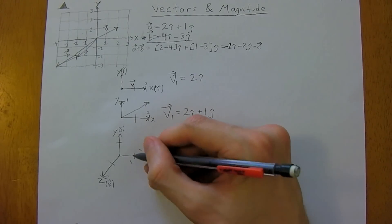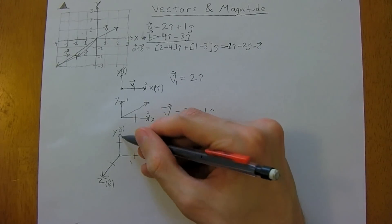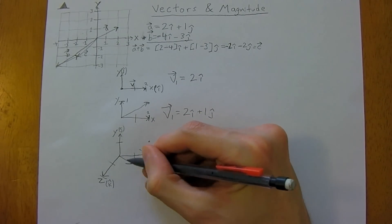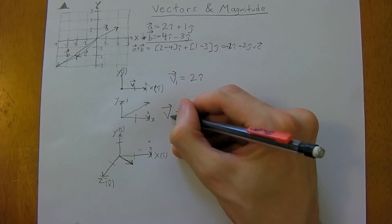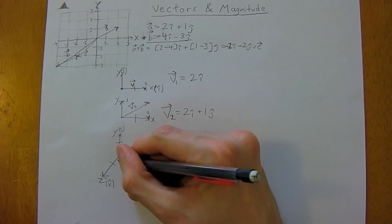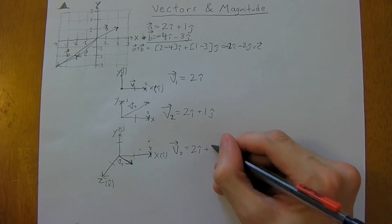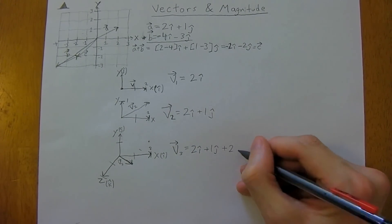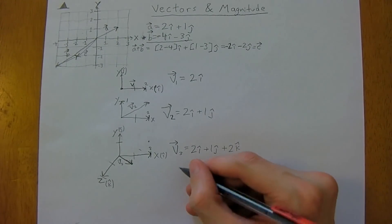We would represent that vector in three directions as 2i-hat plus 1j-hat plus 2k-hat. And say you wanted to add two vectors in three dimensions — it gets a lot easier working in component form like this.